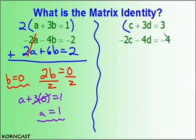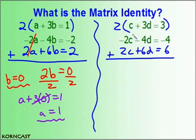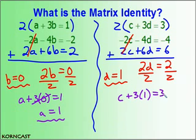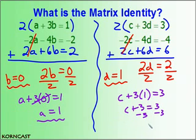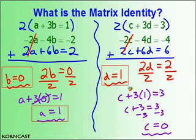Using the same elimination process on the other system: 2 times C plus 3D equals 3 gives 2C plus 6D equals 6. Adding to the second equation, the C terms cancel, leaving 2D equals 2, so D equals 1. Plugging back in: C plus 3 times 1 equals 3, so subtracting 3 from both sides gives C equals 0.